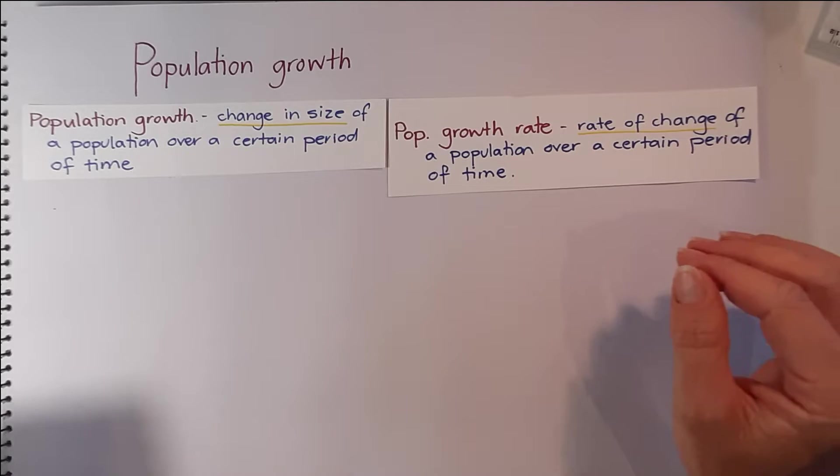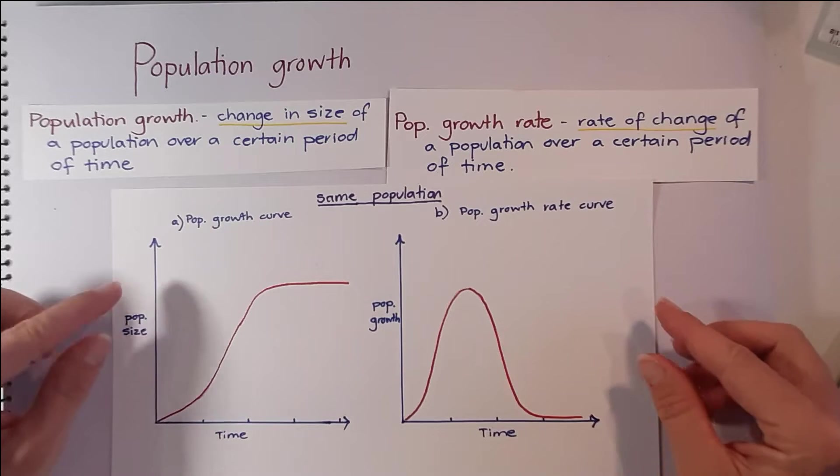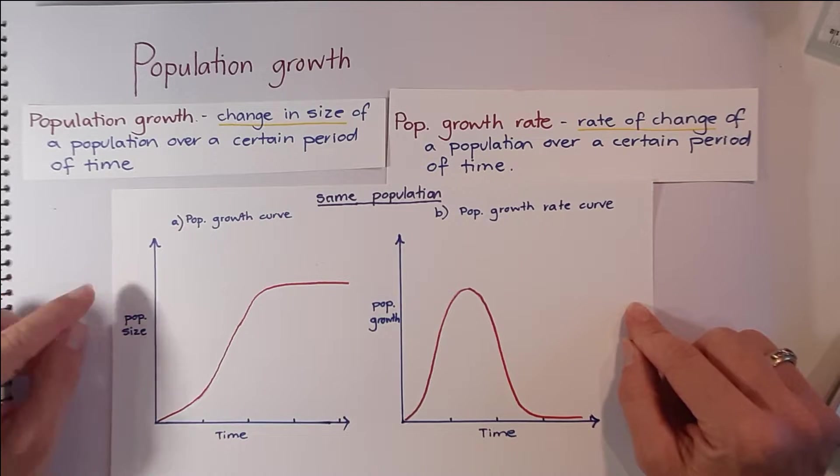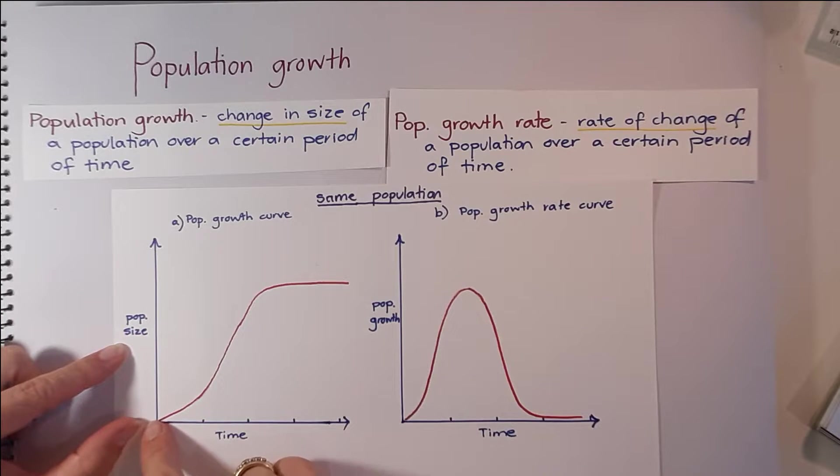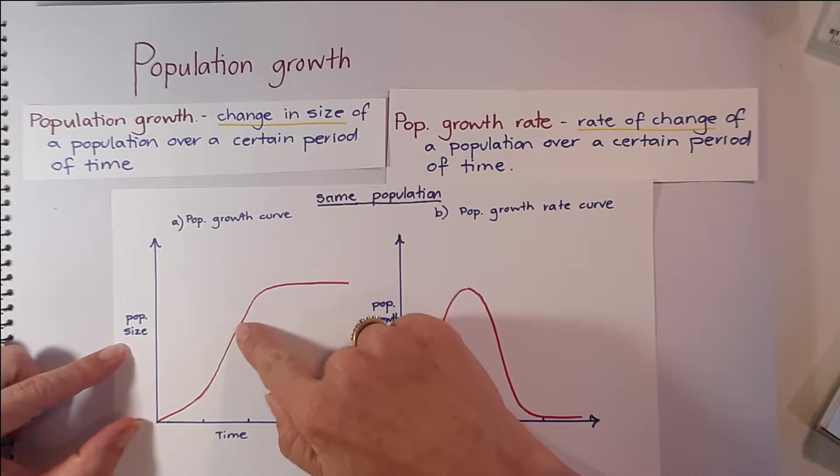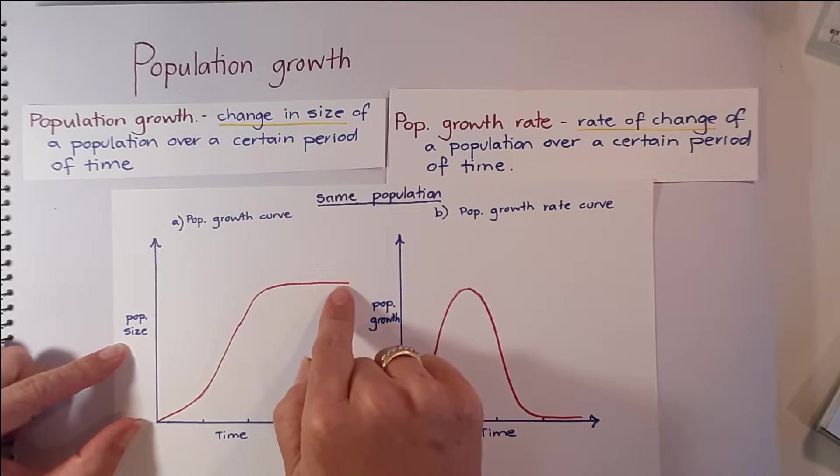How are those two things different though? So if we were to take these two graphs here, we can see that on the first one, this is about the change in the size of a population. So we can see that over time, the population increases and then increases a bit faster until it reaches a maximum level and continues at that rate. So this is where the population size is remaining consistent over time.